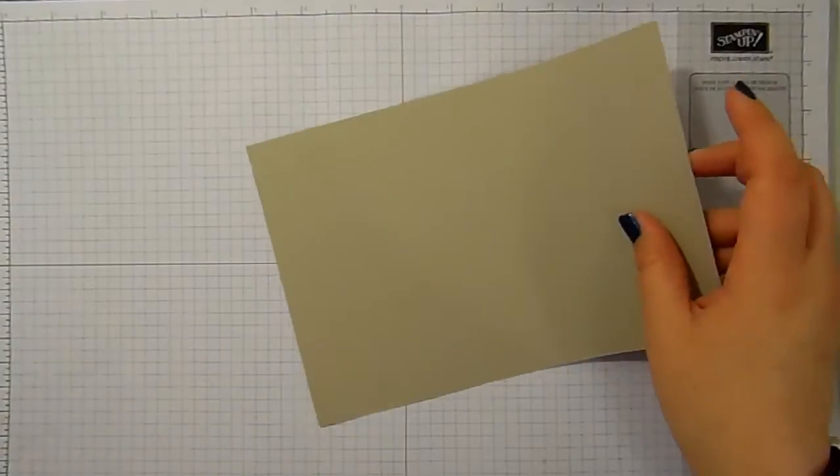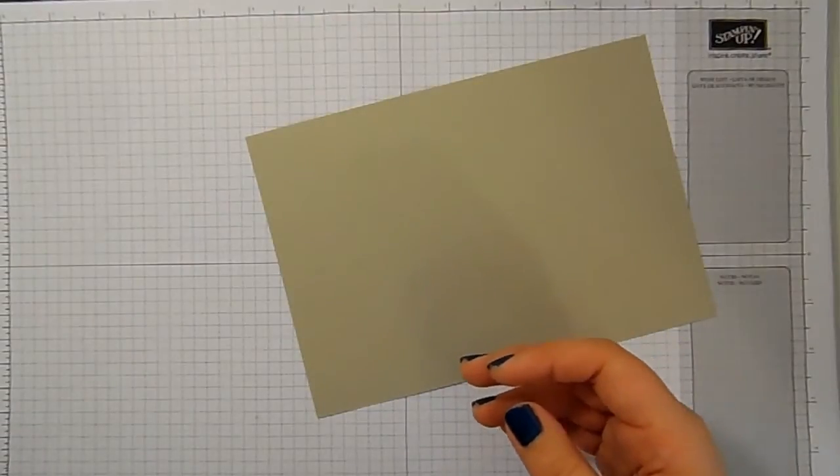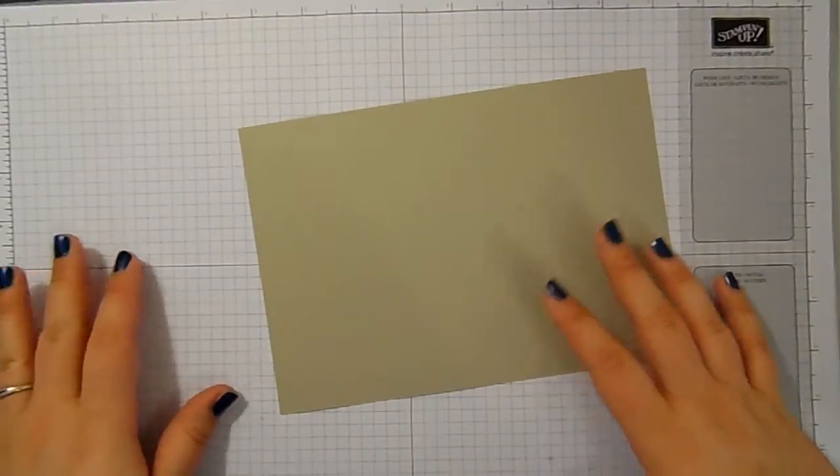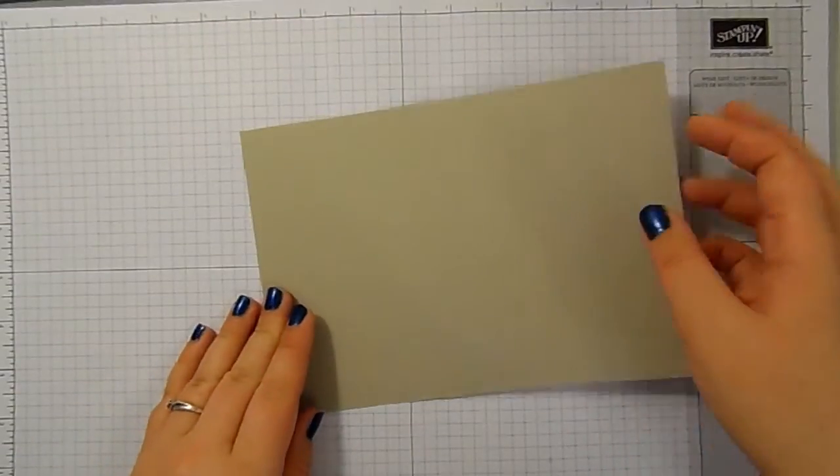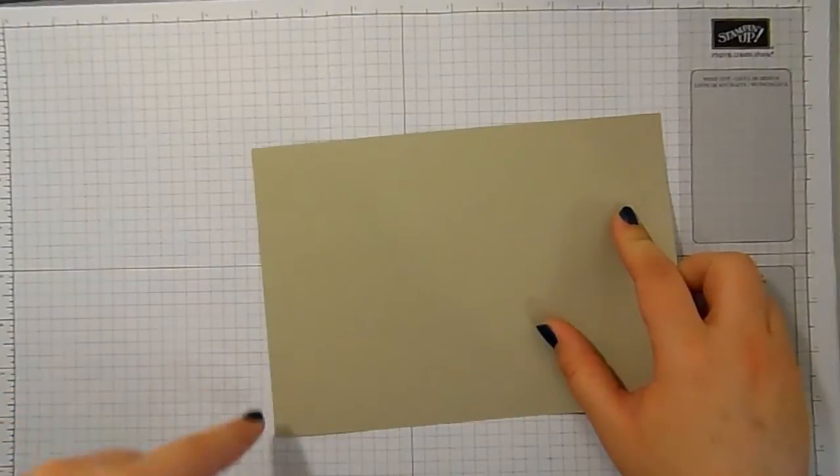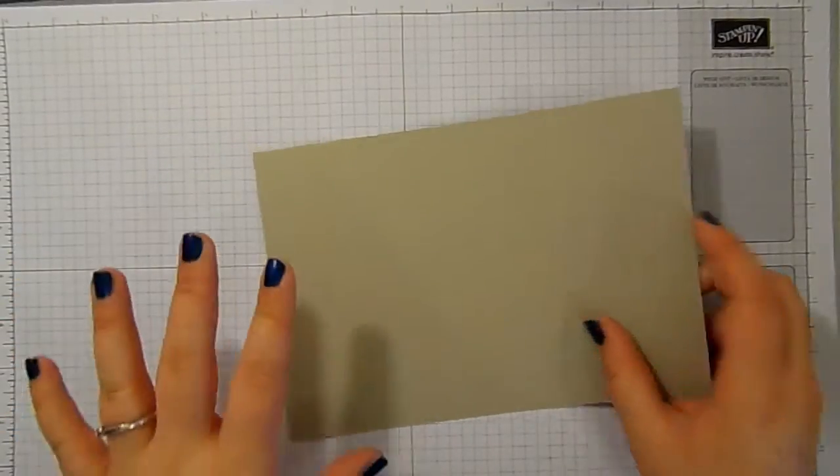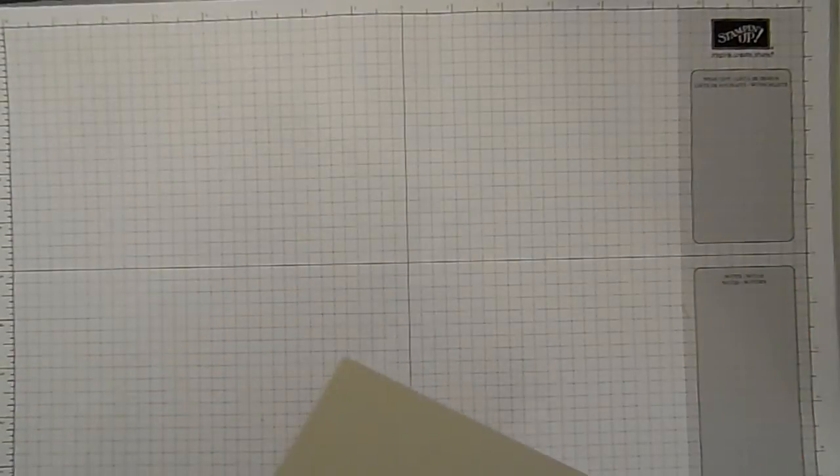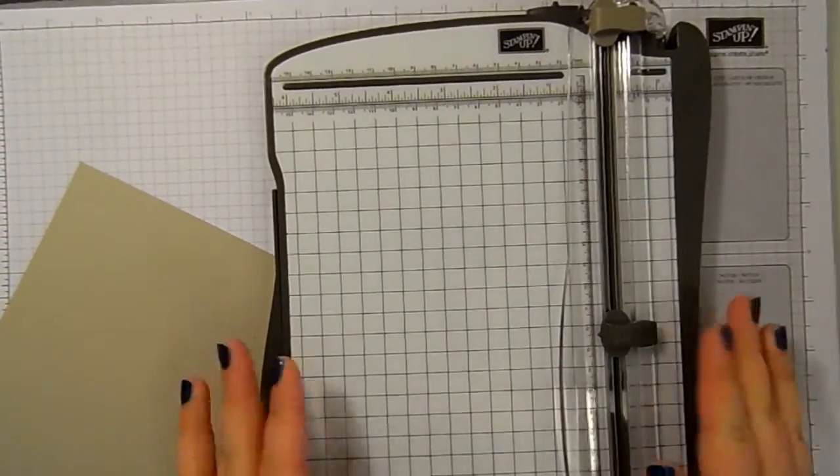I've got a piece of Sahara Sand. This one here is in Soft Suede. I thought I would use Sahara Sand today and my piece of cardstock is 21 centimeters by 14.8, which is 8 and a quarter by 5 and 7 eighths. I cut a piece of A4 in half and I'm going to use my Stampin' Trimmer.